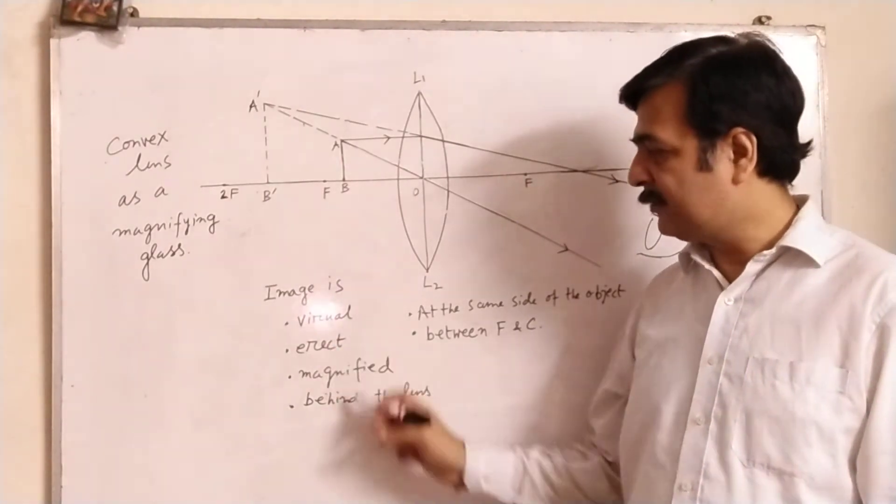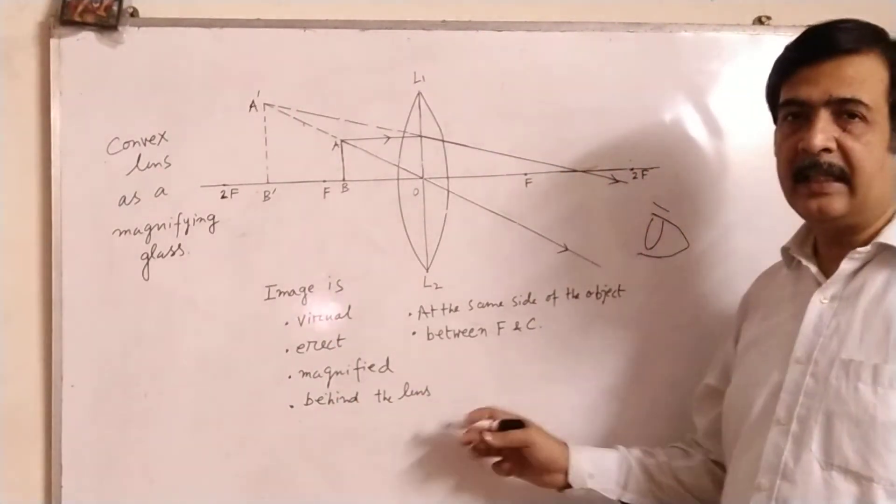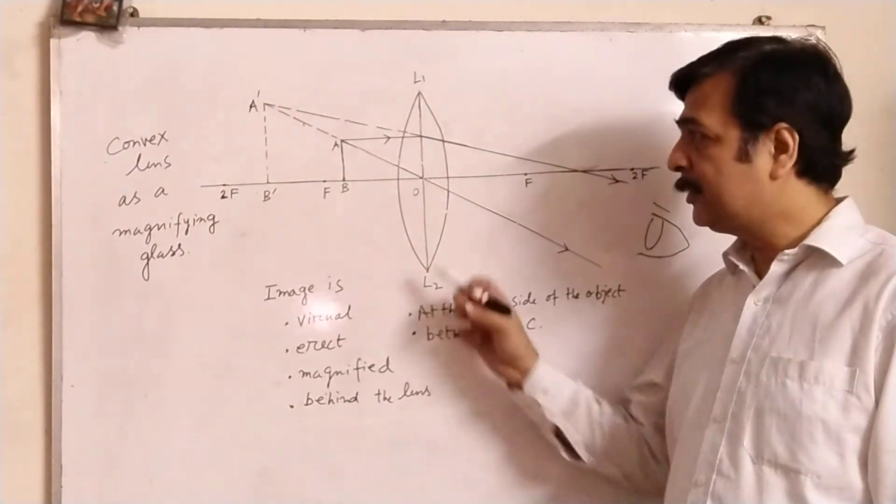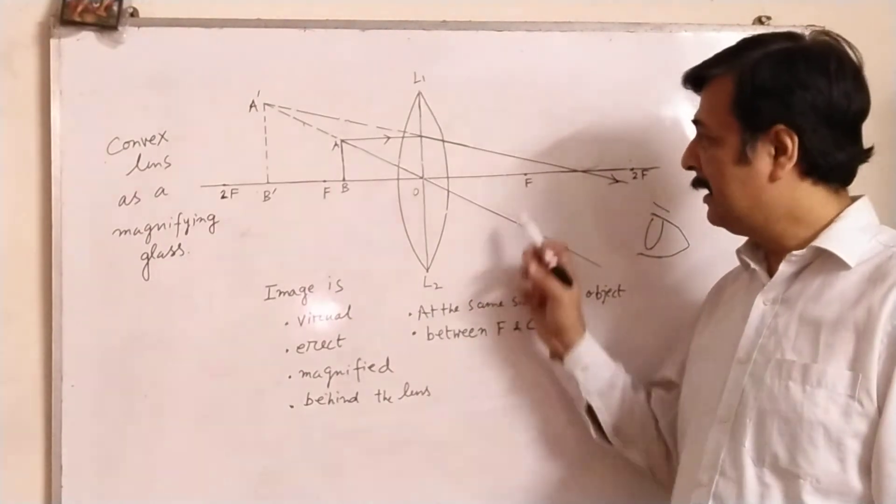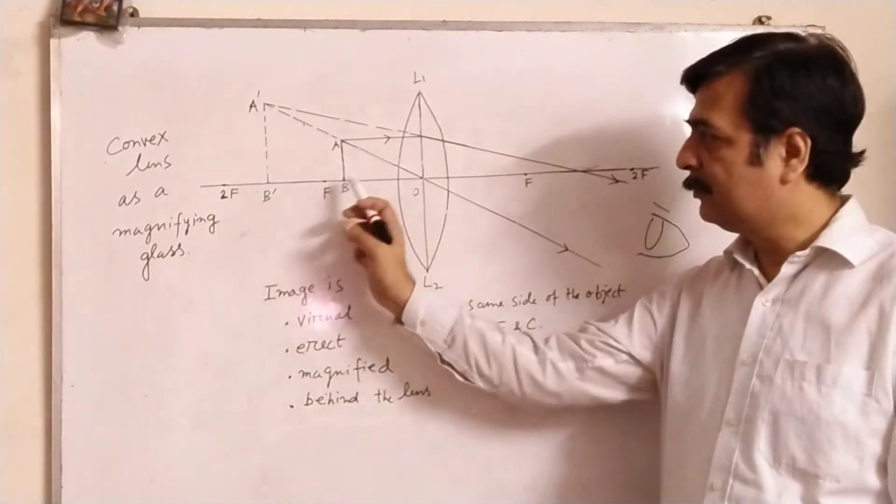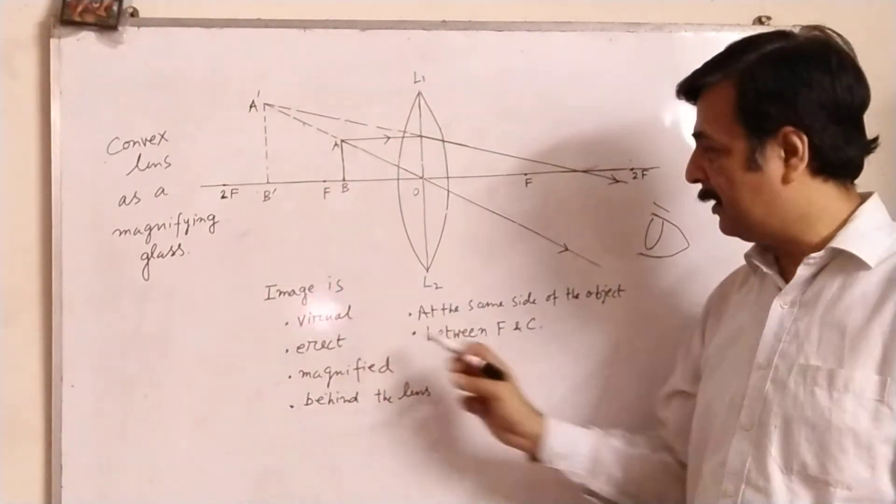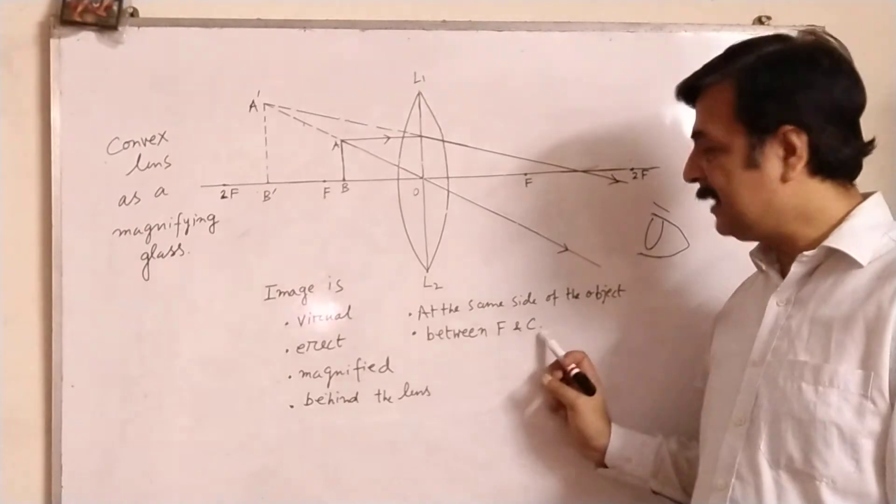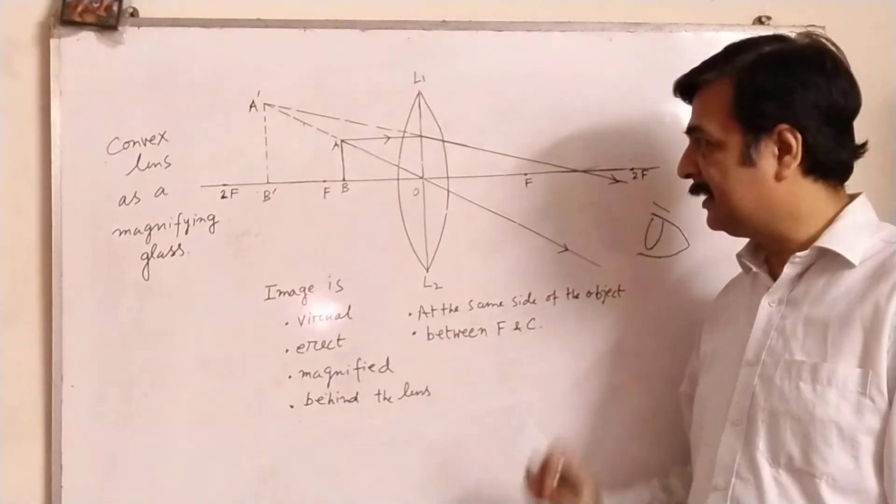And the image is formed behind the lens. Behind the lens means at the same side of the object. And the position of the image will be between F and 2F. Position of the image will be between F and 2F. Here between F and 2F, 2F means the center of curvature, so between F and C.